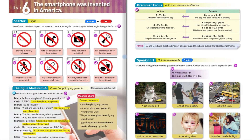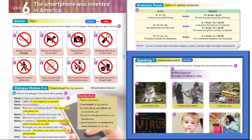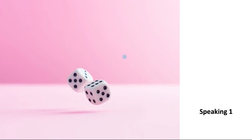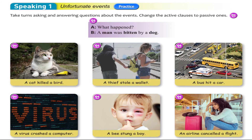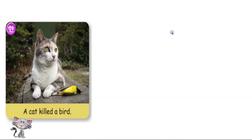That's the end of the grammar. Just the last thing to do - we're going to go through the speaking section: unfortunate events. Unfortunate means unlucky. Take turns asking and answering questions about the events. Change the active clauses to passive clauses. All these clauses are in active form and you have to change them to passive.